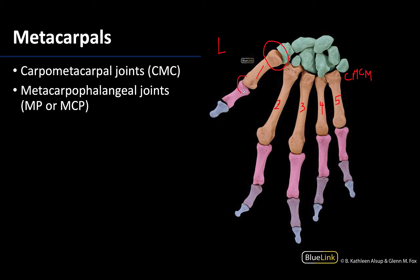The joint between the metacarpals and the proximal phalanges are your metacarpophalangeal joints — so between the distal end of the metacarpals and the proximal end of the proximal phalanges are your MP joints, and these are examples of condyloid joints.